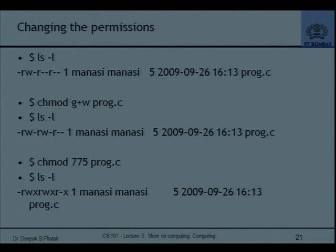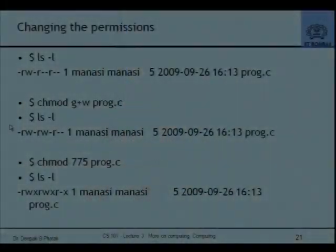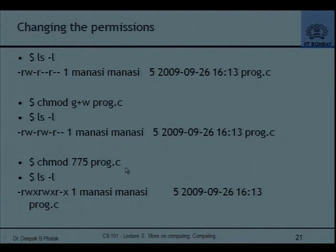cat, as told, concatenates files and the output goes to STDOUT. tac concatenates them in reverse — the last line comes first, the first line comes last. more and less are paging output commands. If you cat a thousand-line file, it scrolls past so quickly you only see the last screenful. more means show more of the file, less means show less — both are essentially equivalent. 'less filename' has become a very standard way of displaying any text file on screen, one page at a time using space to advance.